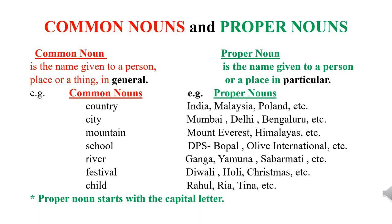For example, country — country is a common noun. But if we talk about India, Malaysia, Poland, it means we are talking about the particular countries. So these are proper nouns.